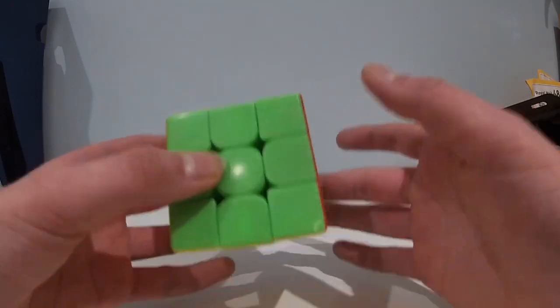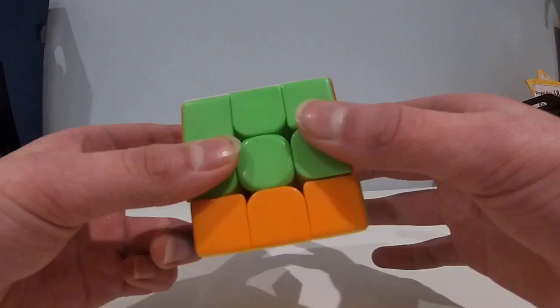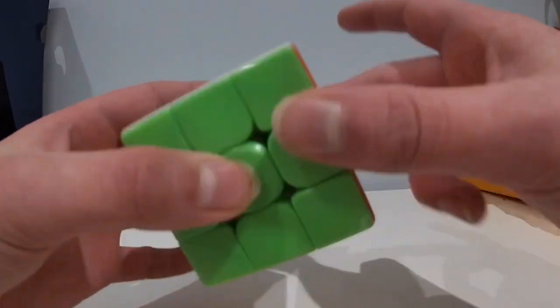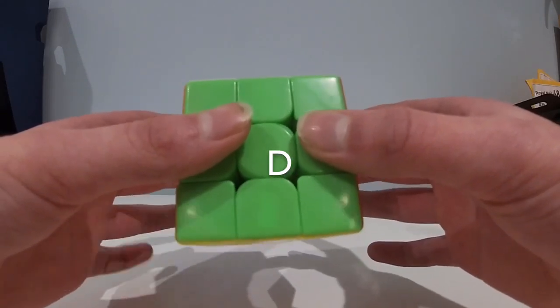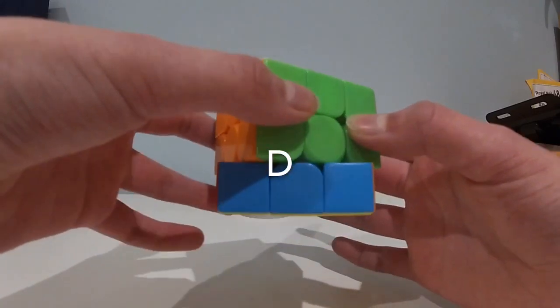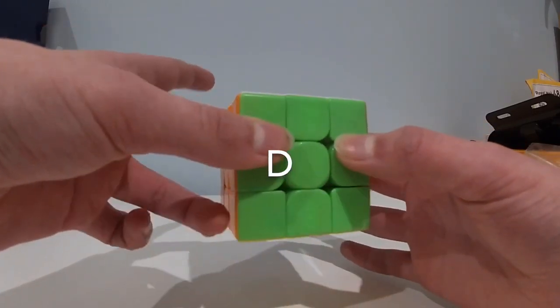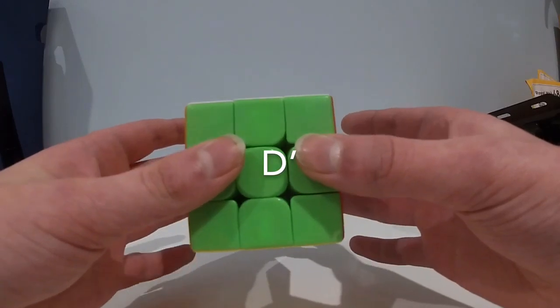Firstly, D and D prime, very much like U moves, is done with a finger flick. Except now you are using your ring fingers. For D you use your left ring finger and flick like this. And D prime is your right ring finger flicking the other way.